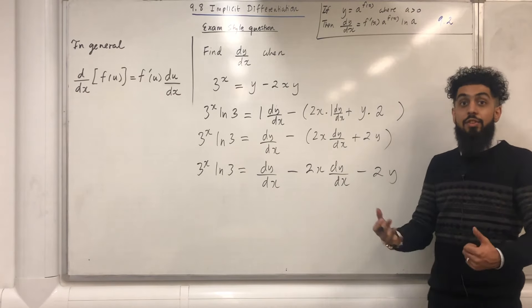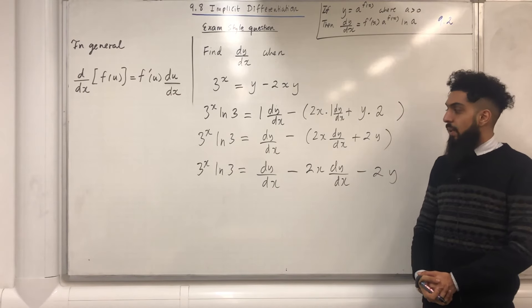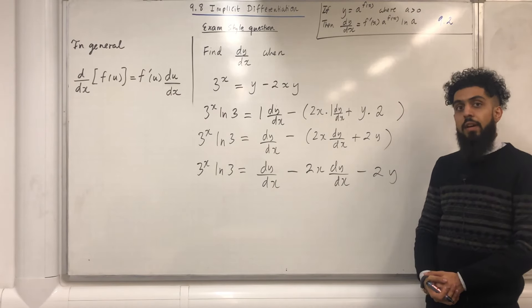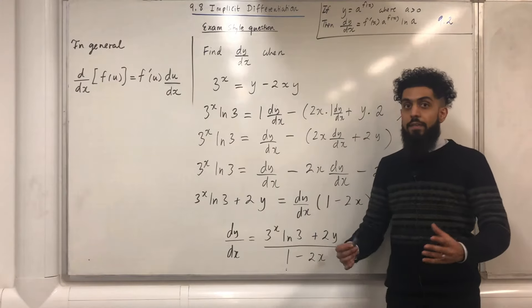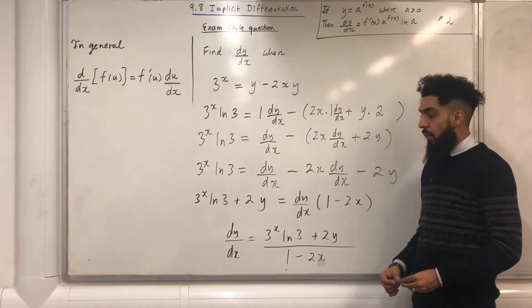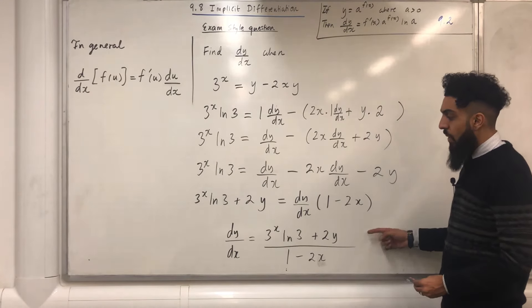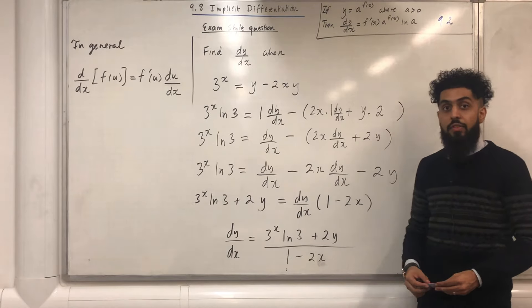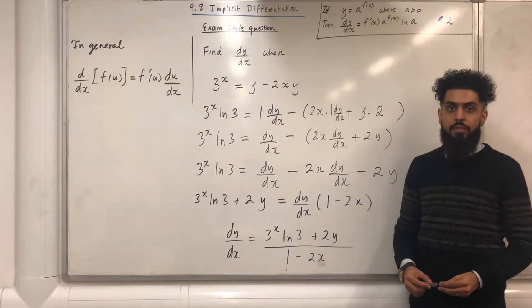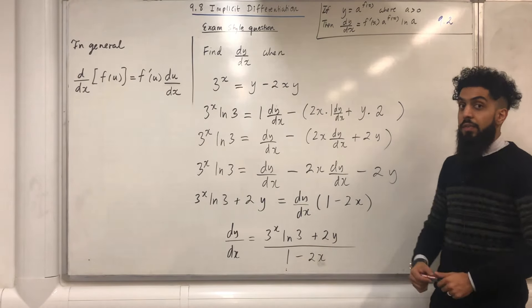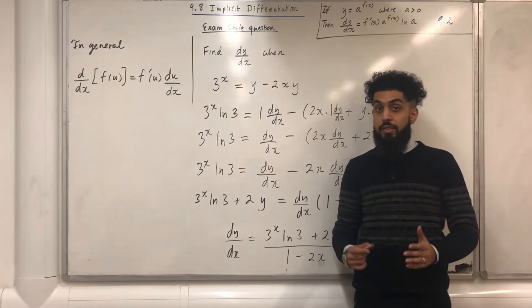The target is to rearrange and make dy over dx the subject. After factorising and rearranging, dy over dx equals (3 to the power x times ln 3 plus 2y) all over (1 minus 2x). If you found this video useful, don't forget to subscribe.